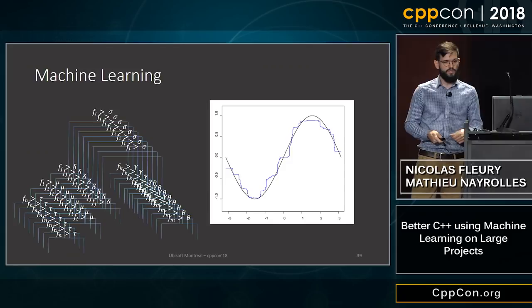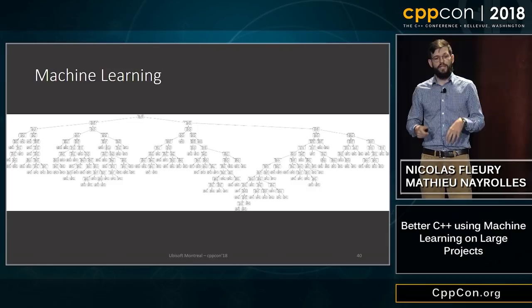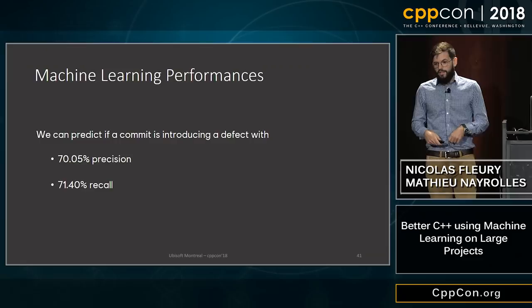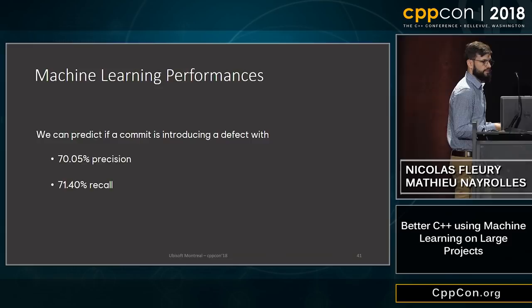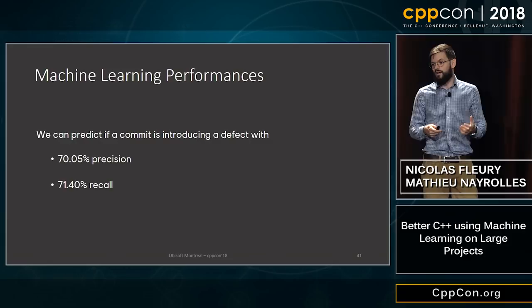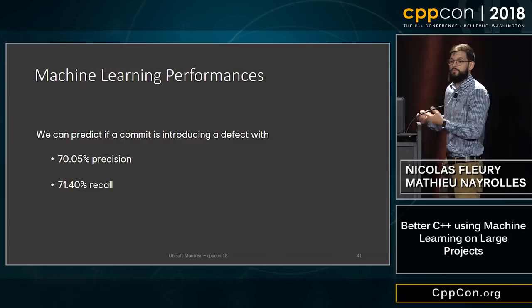What about the performance of our algorithm? We currently have 70% precision. Precision is the rate of false alarms — it means for every alarm the system gives you, it is right 70% of the time, meaning 30% of alarms are false alarms. We also have a recall of 71%.